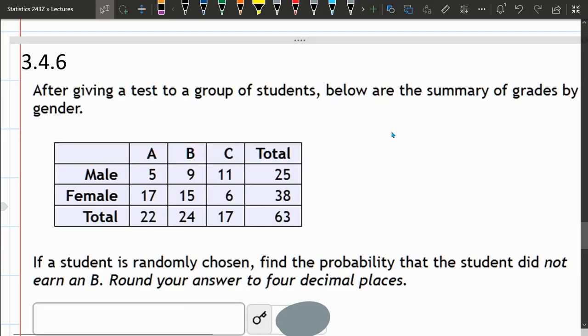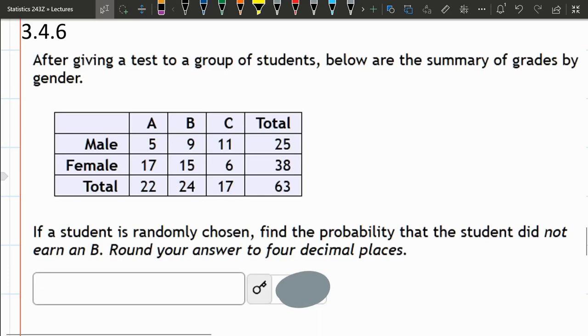In this chart right here, we have a bunch of students and their grades, broken down by grade and gender. If a student is randomly chosen, find the probability the student did not earn a B.